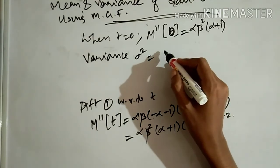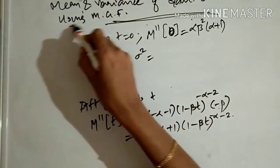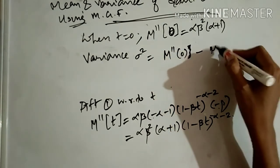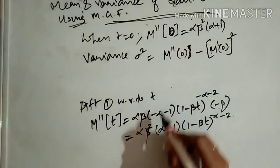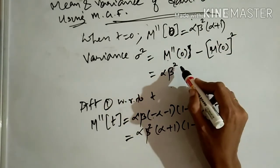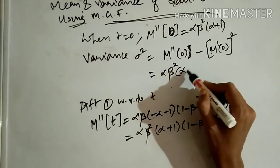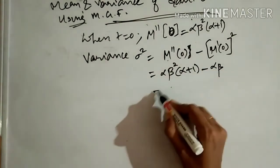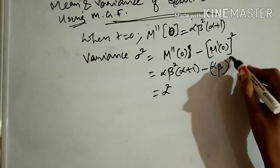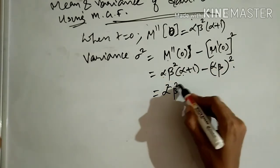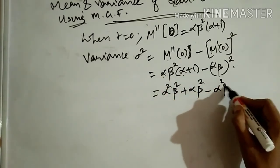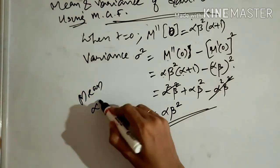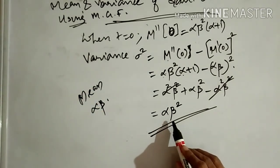Using the MGF formula for variance: Var(x) = M''(0) - [M'(0)]². We have M''(0) = αβ²(α+1) and M'(0) = αβ. So variance = αβ²(α+1) - (αβ)² = α²β² + αβ² - α²β². The α²β² terms cancel, giving variance = αβ². The mean of the gamma distribution is αβ and the variance is αβ².